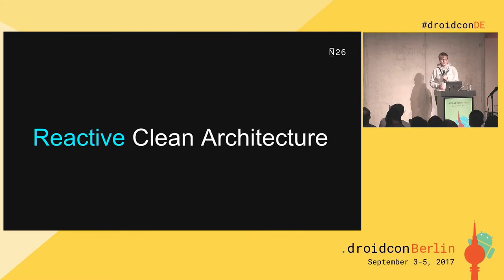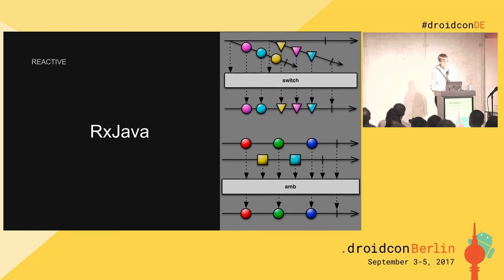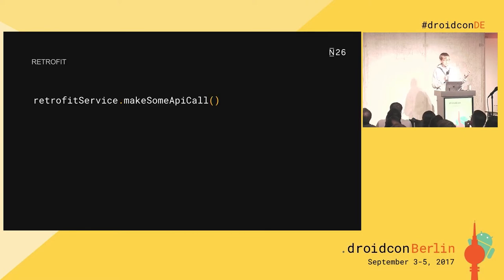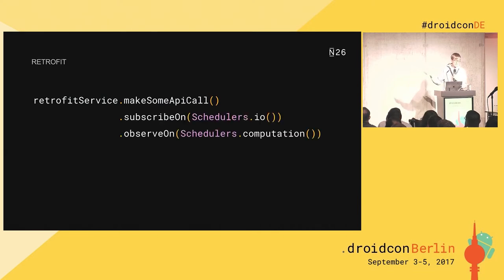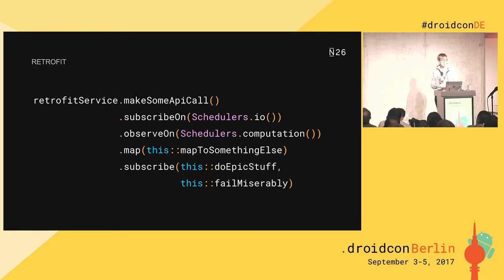The first thing we notice in this title is the word reactive. When most of us think about reactive, we usually think about RxJava. This is a very popular library that many Android developers use, and it's so popular that other libraries have integrated with it as well. This is the case of Retrofit, where we can make an API call, get back a single observable, and when this API call is ready, this single observable is going to emit. We can control the thread where things are executed, map it, subscribe to it, and do various things. This is indeed a very good way to use RxJava.